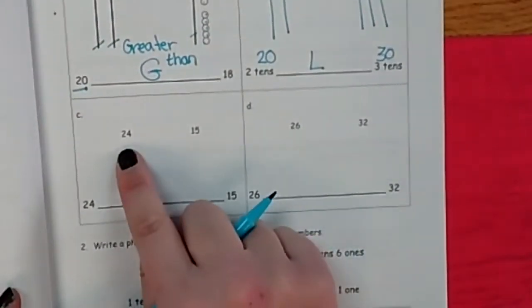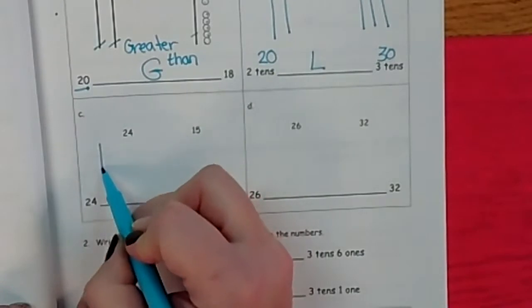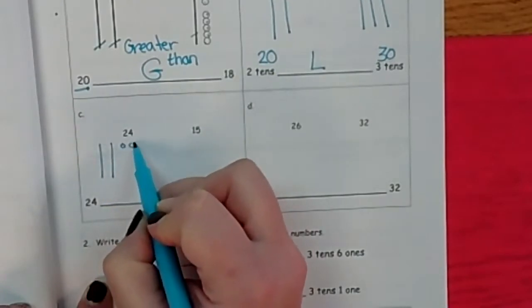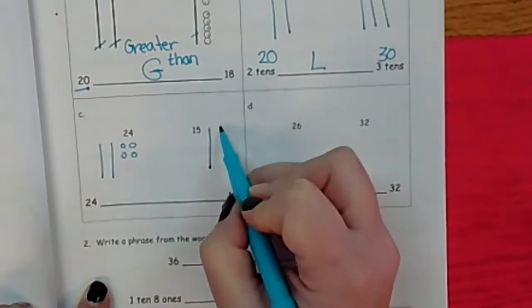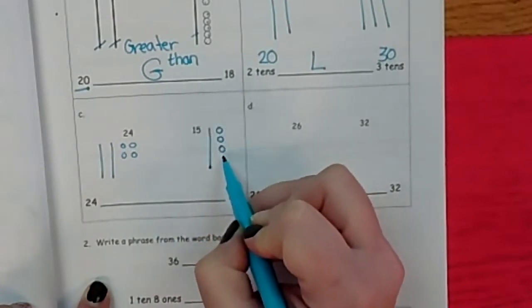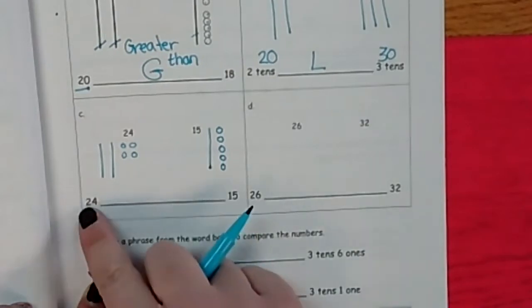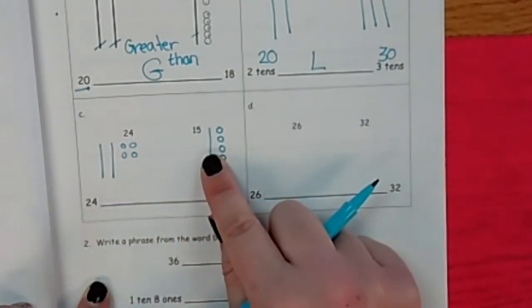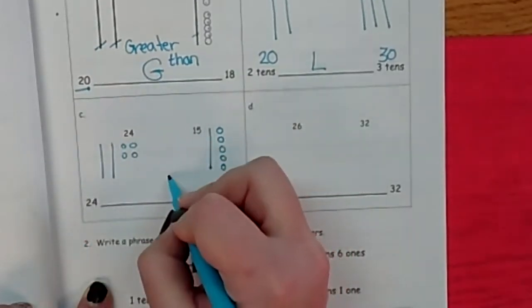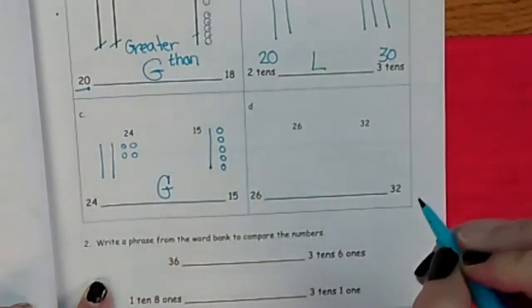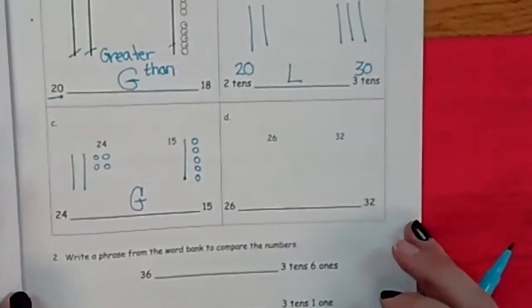Here we go. Now we need to draw 24. 10, 20, 1, 2, 3, 4. Now we need to draw 15. 10, 11, 12, 13, 14, 15. Okay. 24 is blank 15. It's bigger. You're right. So it's greater. And that comes with the letter G. Whoa, you guys are so smart.